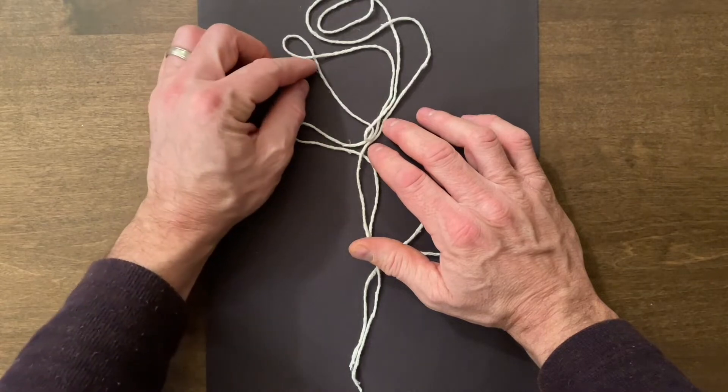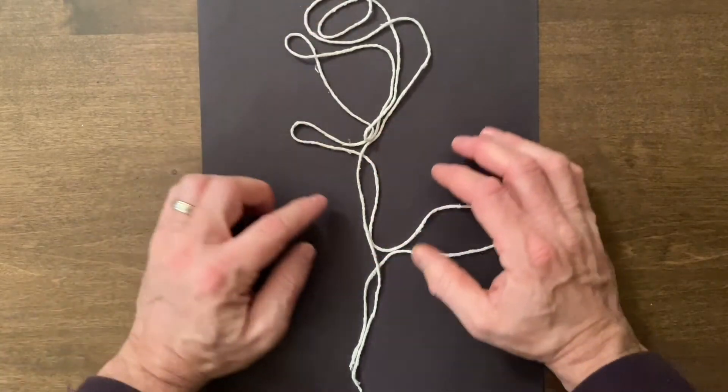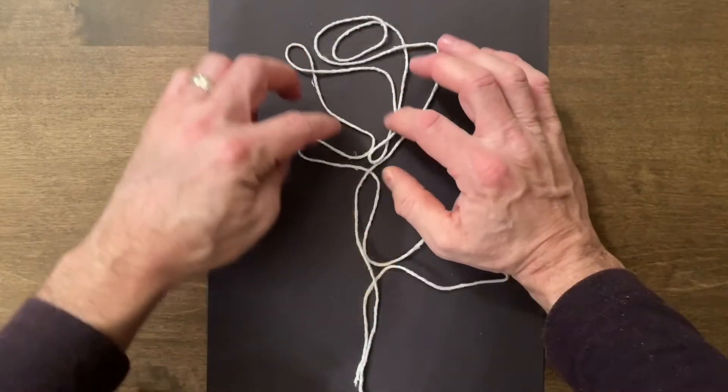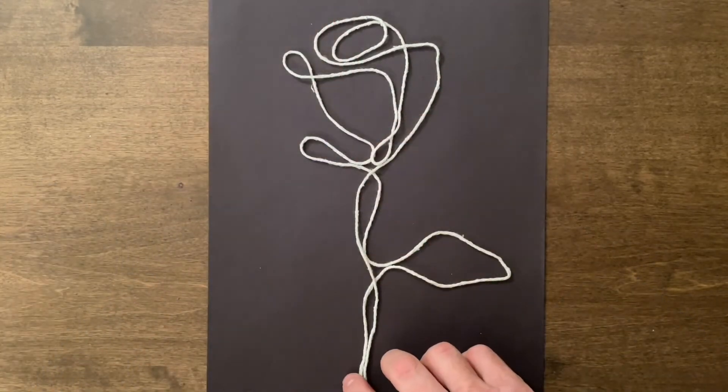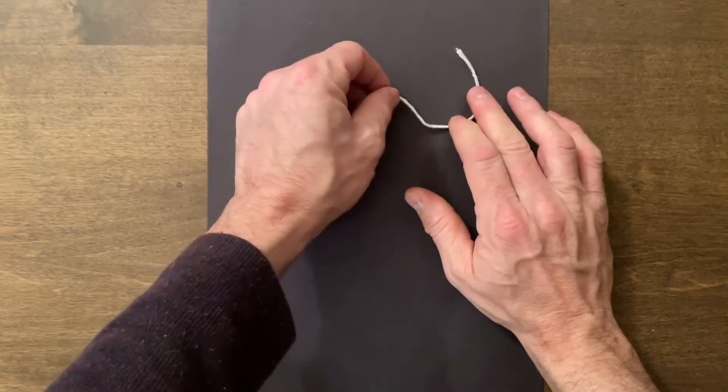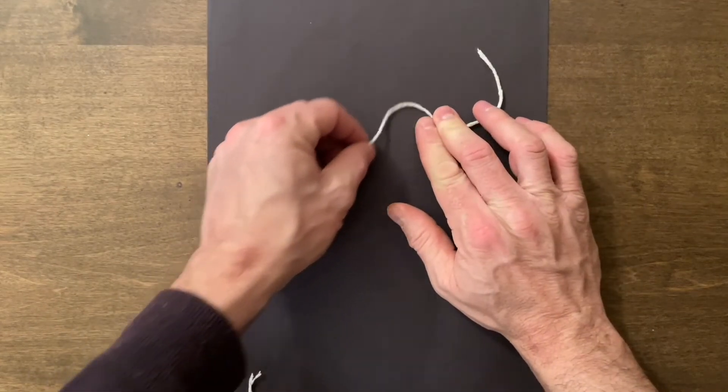So the first picture I made was a rose. I had to imagine that I was drawing with one line and that the string was my line that I was moving across the page. And if I kept that line going I could turn it into a flower.